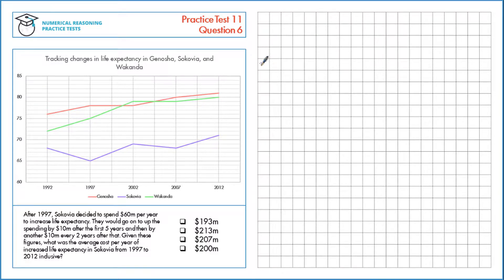For the first 5 years we have $60 million per year. So $60 million times 5, which is $300 million total.